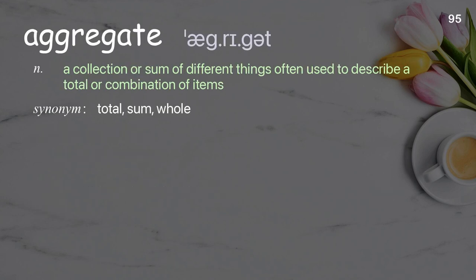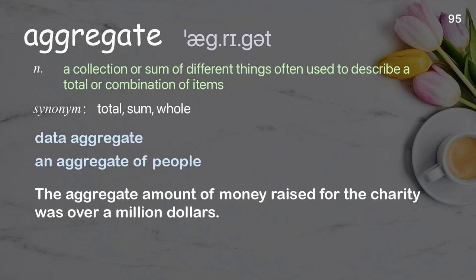Aggregate: A collection or sum of different things; often used to describe a total or combination of items. Examples: Data aggregate. An aggregate of people. The aggregate amount of money raised for the charity was over a million dollars.